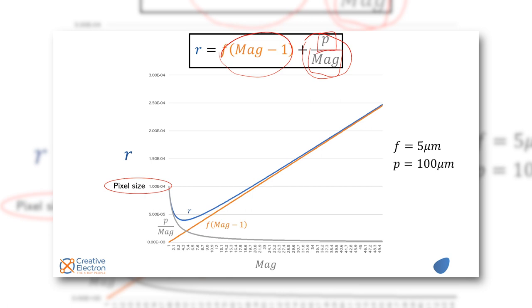And the smallest resolution you can achieve is when you have magnification equal to one, which means that pixel size is indeed the resolution of the system.